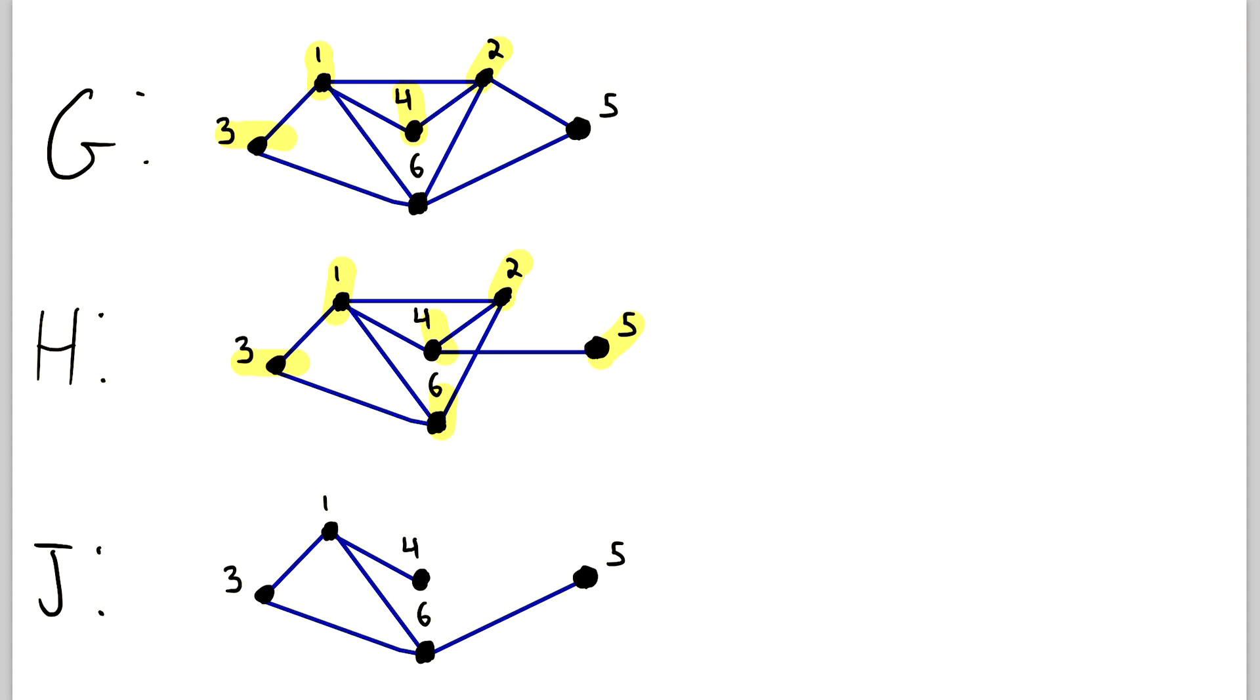And that is the same vertex set as G. G also has the vertices 1, 2, 3, 4, 5, and 6. So the vertex set of H is a subset of the vertex set of G. It happens to be equal to the vertex set of G, but that is still a subset by definition.